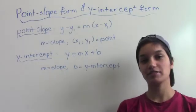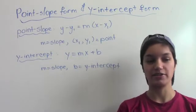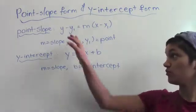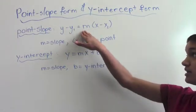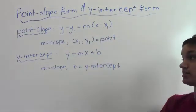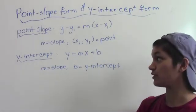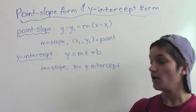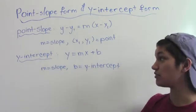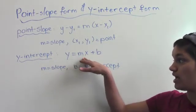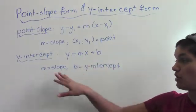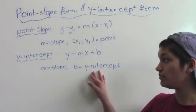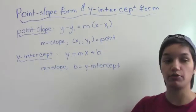Hi, Chris. We're going to talk about point slope form and y intercept form. Point slope equations have the form y minus y1 equals m times x minus x1, where m is the slope of the graph of the equation and x1, y1 is a point on the graph. Y intercept equations have the form y equals m times x plus b, where m is the slope of the graph of the equation and b is the y intercept of the graph.